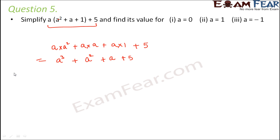Now we have to find out the value of this expression for a = 0. So when a = 0, what happens? 0³ would be 0, 0² would be 0 plus 0 plus 5. So the value of this expression would be 5.